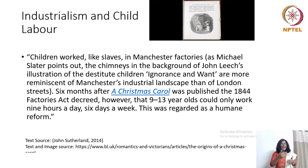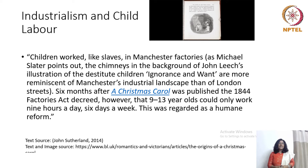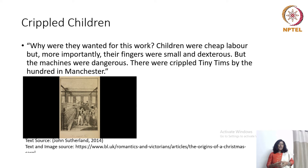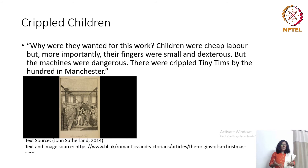Six months after the publication of A Christmas Carol, there is a very influential reform — a change in the Factories Act stating that 9 to 13 year olds cannot work more than 9 hours a day and 6 days a week. One can connect Dickens' writing to this kind of social reform. Why did the industries employ children? Children were cheap labour, but more importantly their fingers were small and dexterous. But the machines were dangerous — children were crippled. There were crippled tiny Tims by the hundred in Manchester.